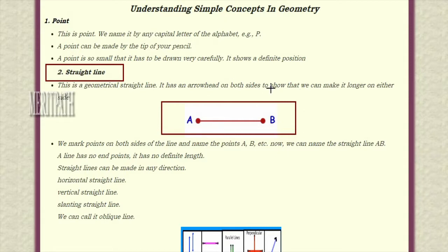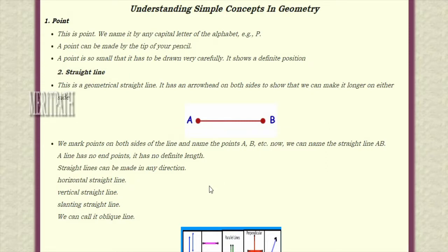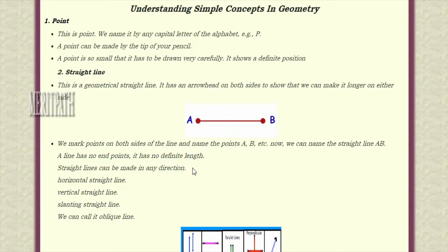If we put an arrowhead on both sides, we call it a line. A line can be drawn in a horizontal way, or as a vertical line, or a slanting line. A straight line can be drawn in any direction.